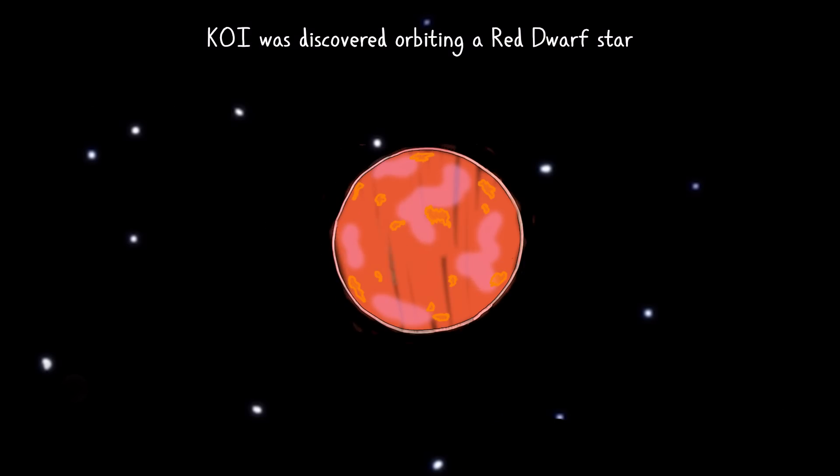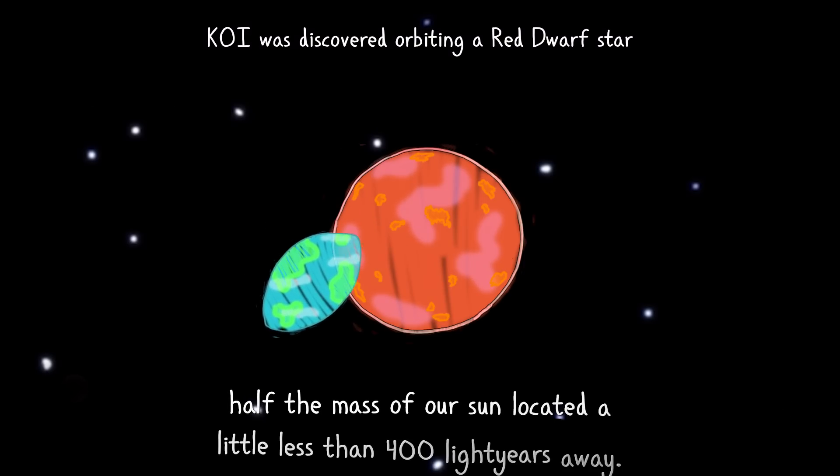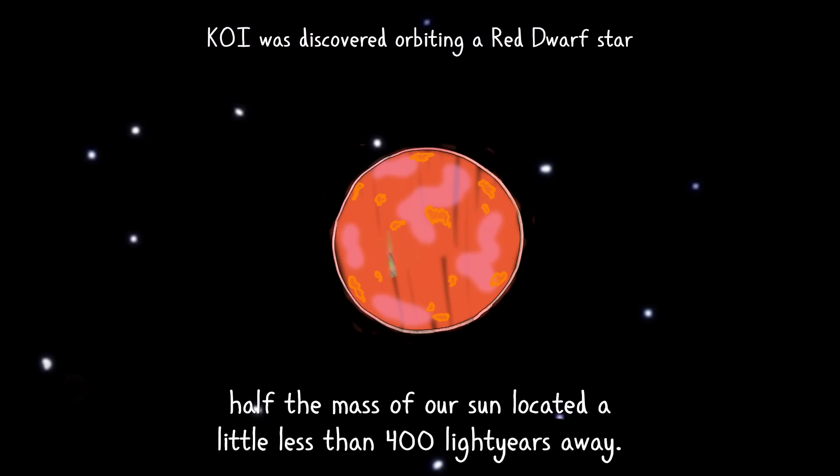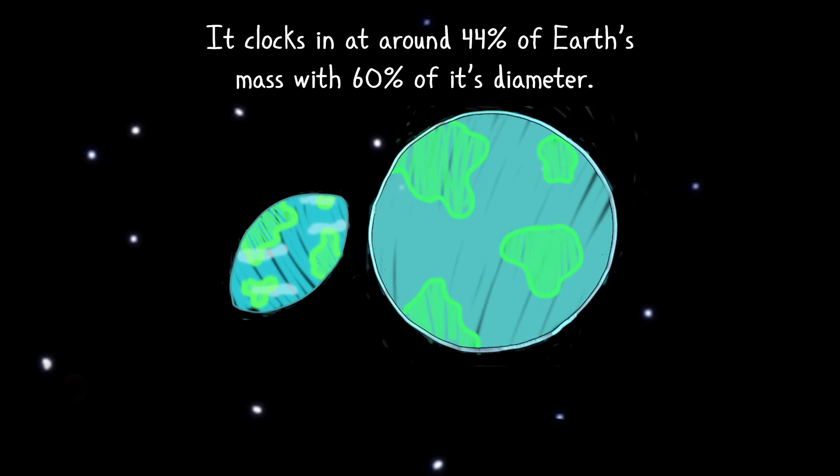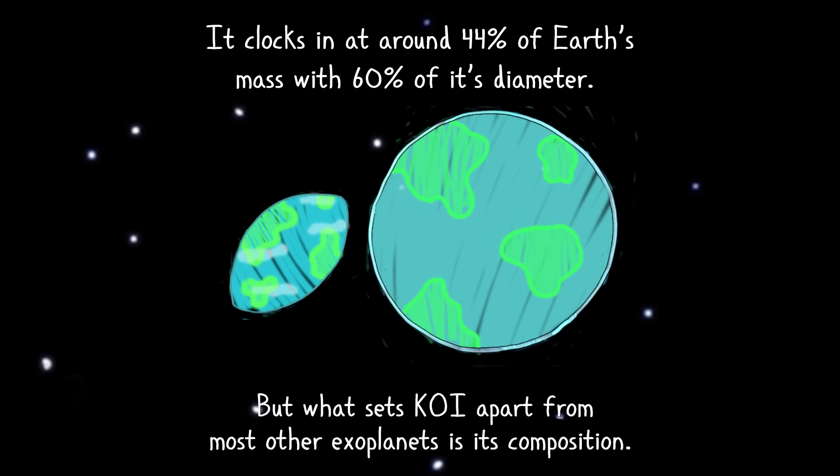KOI was discovered orbiting a red dwarf star half the mass of our Sun, located a little less than 400 light-years away. It clocks in at around 44% of Earth's mass, with 60% of its diameter. But what sets KOI apart from most other exoplanets is its composition.